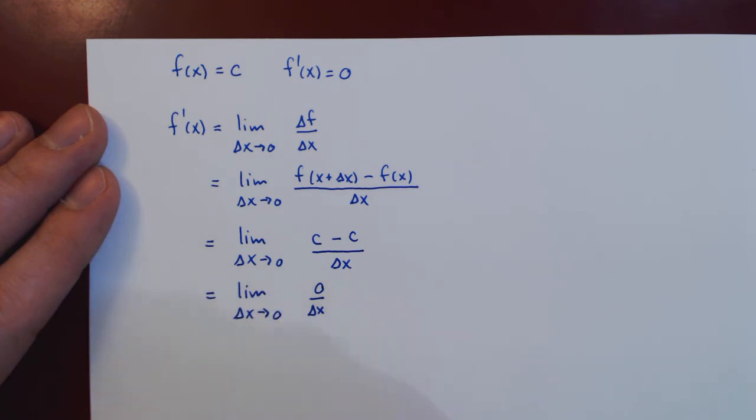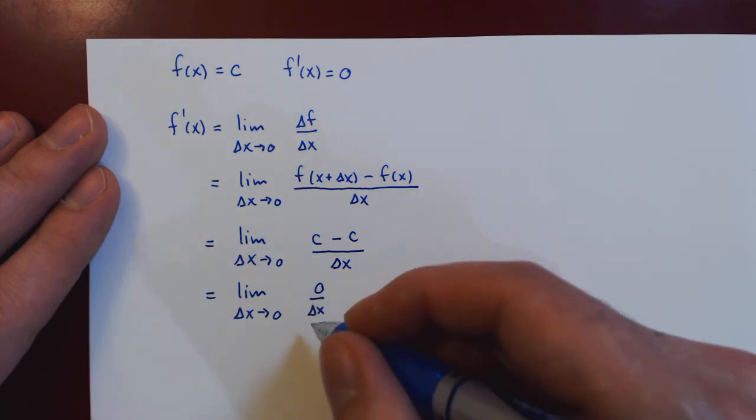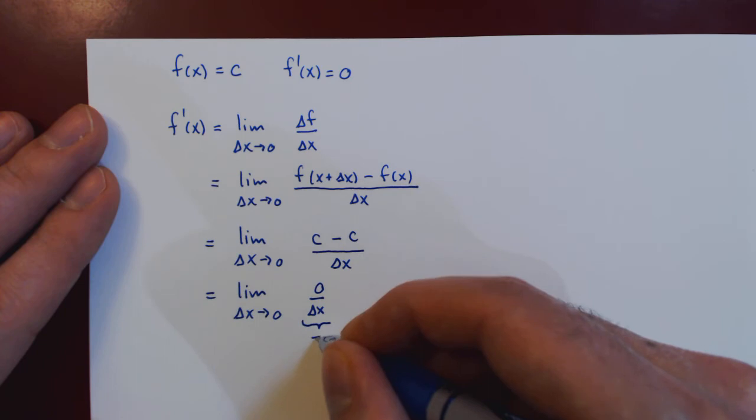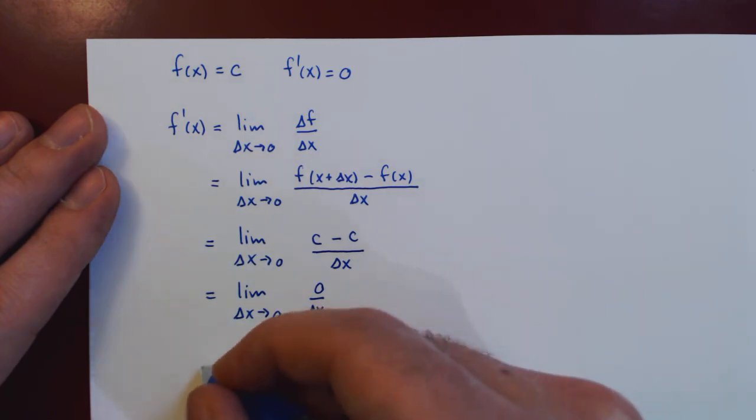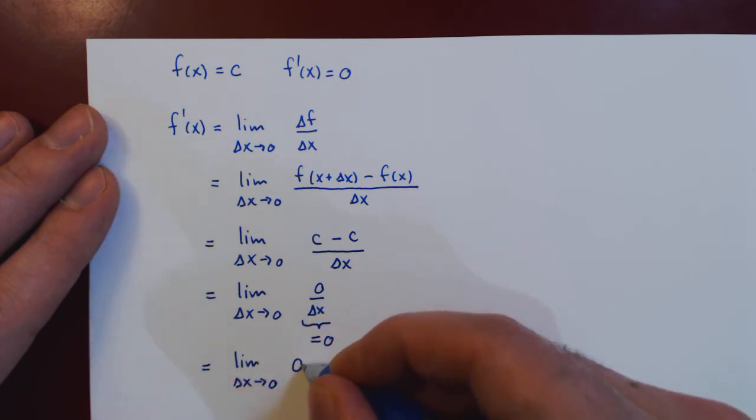delta x is never exactly equal to 0. And so 0 over delta x is always equal to 0. So now what we have is a trivial limit. We are asking for the limit, as delta x approaches 0, of 0.